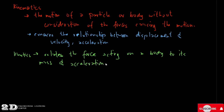If we consider the forces acting on or causing the motion of the body, then we are in the branch of dynamics called kinetics. Kinetics relates the force acting on a body to its mass and acceleration. In kinematics there is no consideration of force — we only consider displacement, velocity, and acceleration. In kinetics there is consideration of the force acting on the body in relation to its mass and acceleration. Those are the two branches of dynamics.